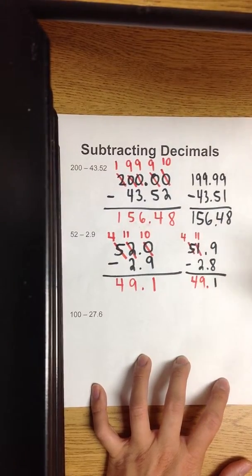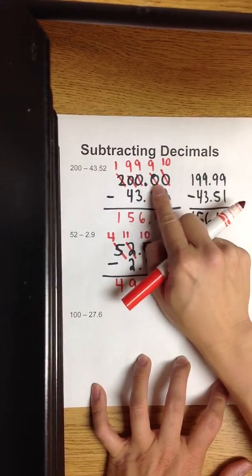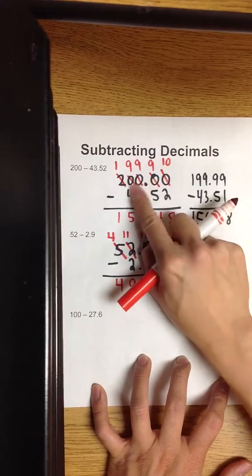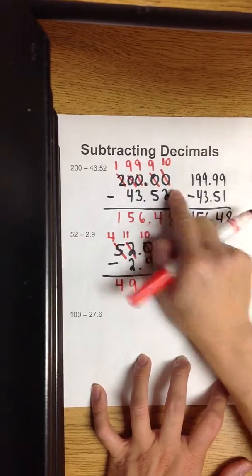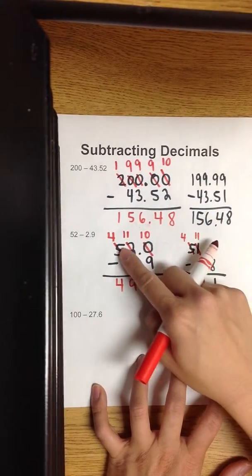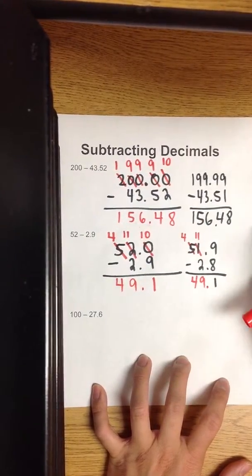Shortcuts — I'll be honest — are better when you have nothing but zeros. If you have a lot of zeros, I would use a shortcut. This only had one zero, so there's no point in doing a shortcut.